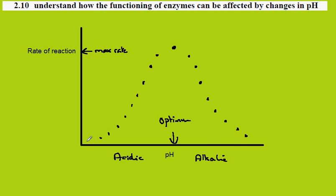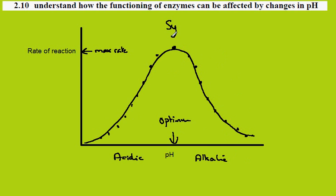If we complete the graph, what we see is a pattern like this. The graph is more symmetrical than the one we saw for temperature, which looks like this — that one was for temperature. But this pH graph is symmetrical.